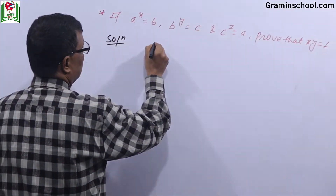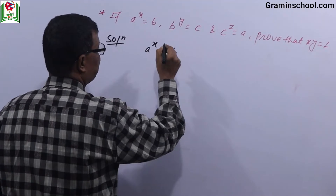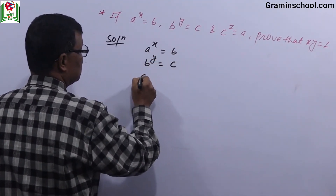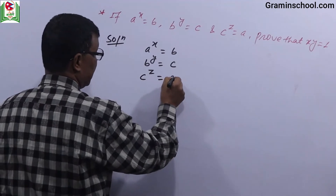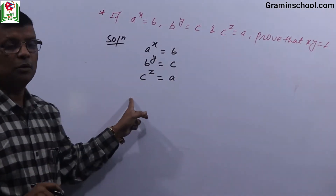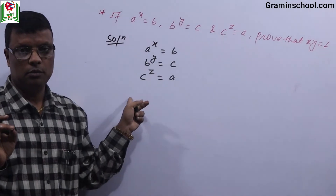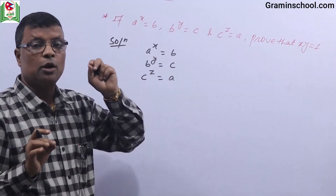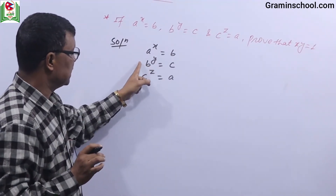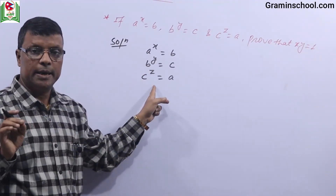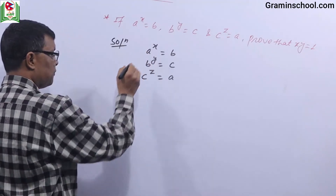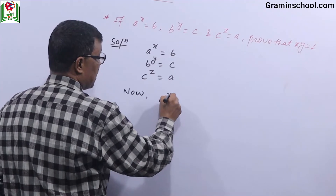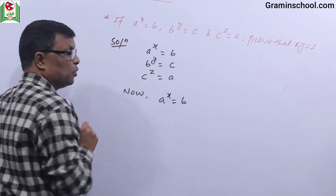If A power X is equals to B, B power Y is equals to C, C power Z is equals to A. Then C power Y, C power Z is equals to C, and C power Z is equals to A.